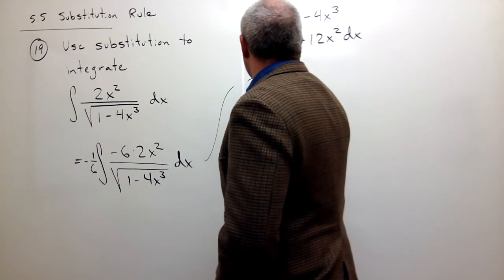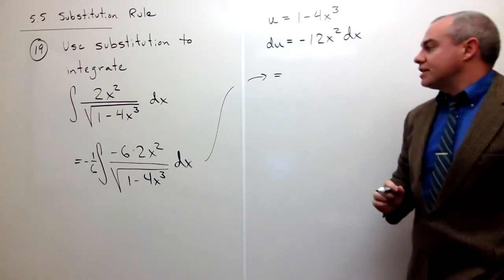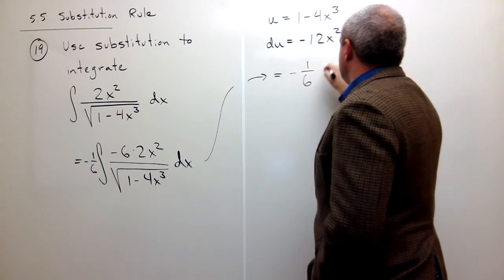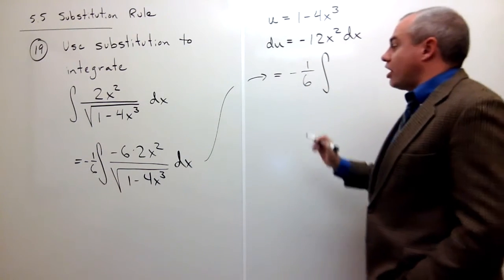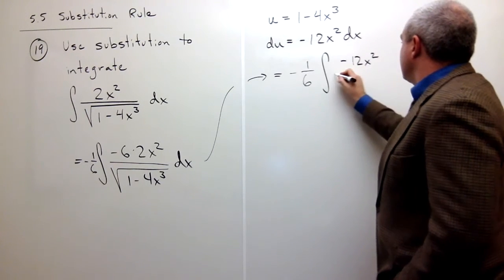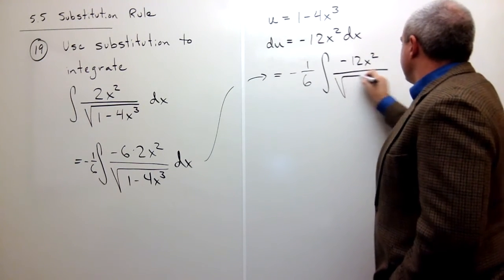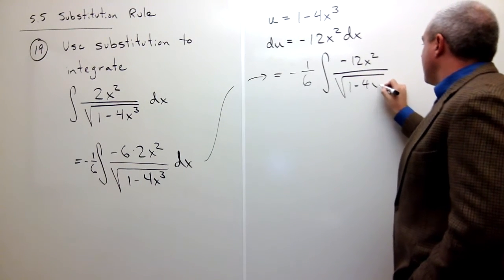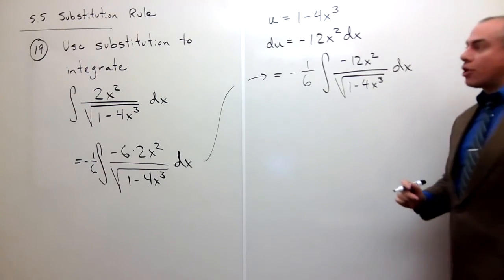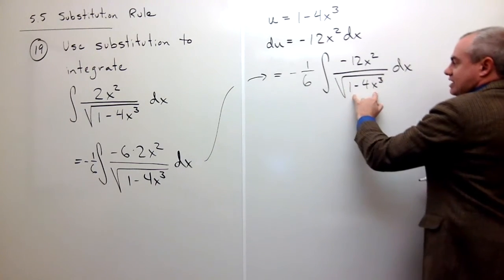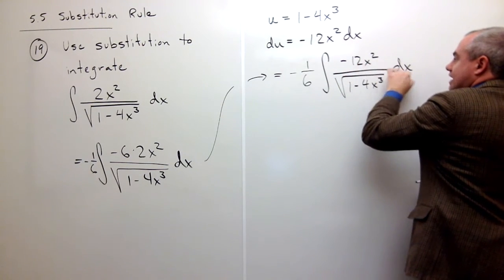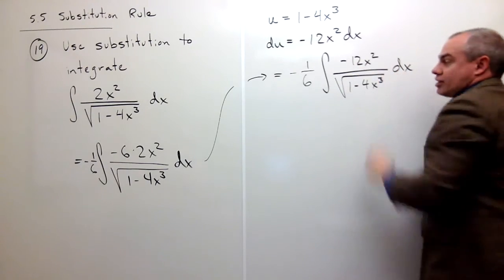Let's move right up here. So here, this is equal to negative 1/6 times the integral of, on top now I have negative 12x squared over the square root of 1 minus 4x cubed dx. And this is perfect because now my u is sitting right here and negative 12x squared dx, my du, is sitting on top.